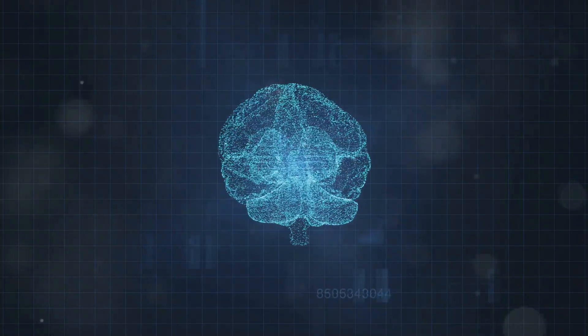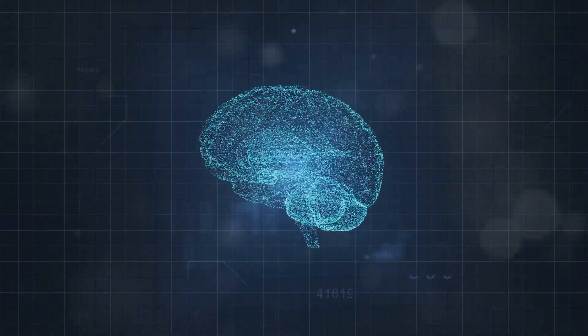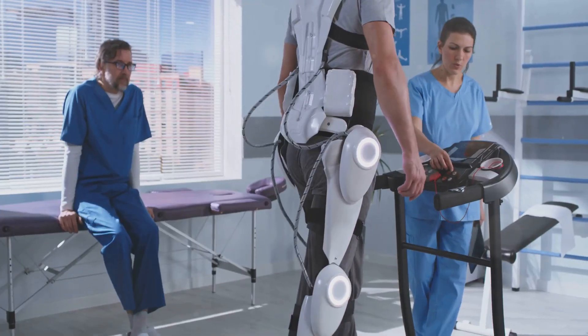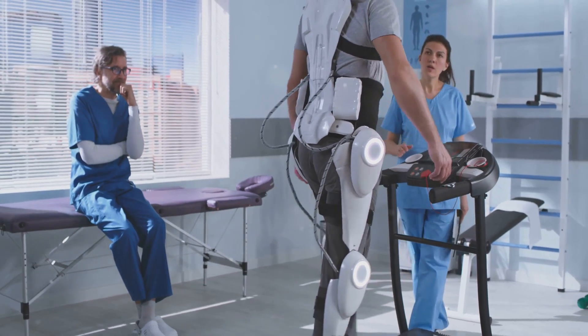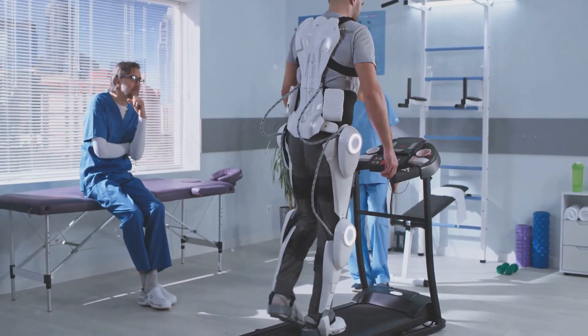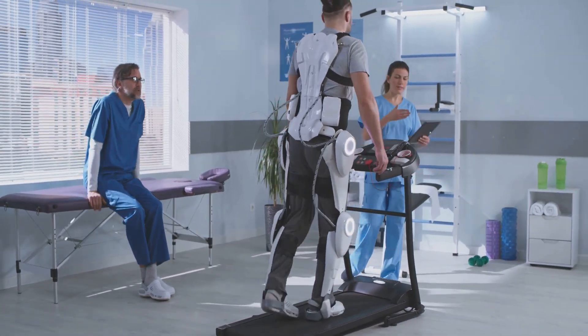Beyond restoring mobility, Musk highlighted several other potential superpowers that Neuralink could provide. According to Musk, the technology could effectively cure paralysis, blindness and mental illnesses, as well as neurological conditions such as Alzheimer's and dementia.